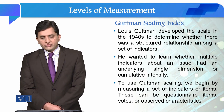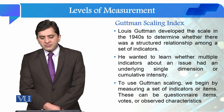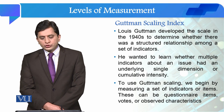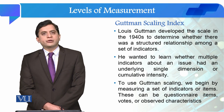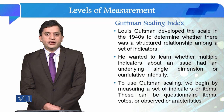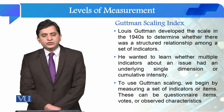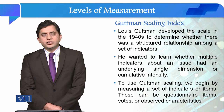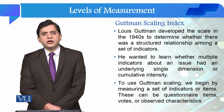To use Goodman Scaling, we begin by measuring a set of indicators or items. There can be a questionnaire item, votes, or observed characteristics. This means that we can observe someone's actions or votes, and there is a simple questionnaire form in which we can see people's attitudes.